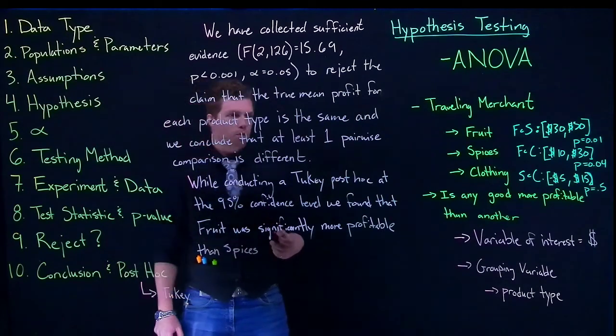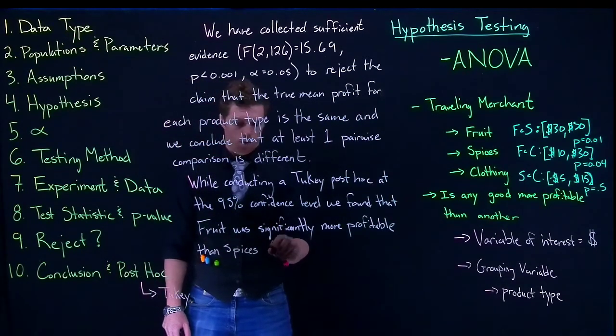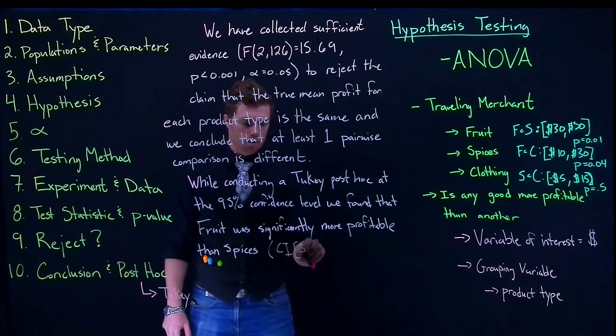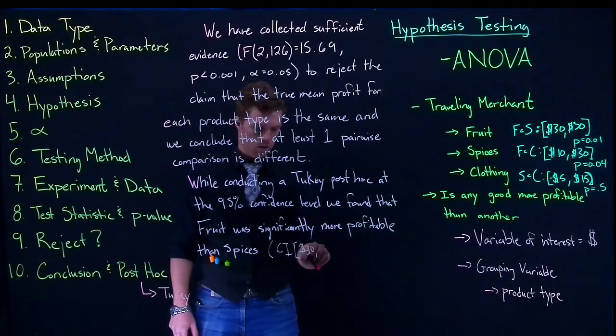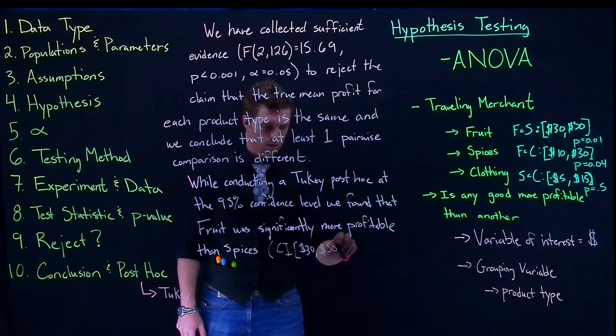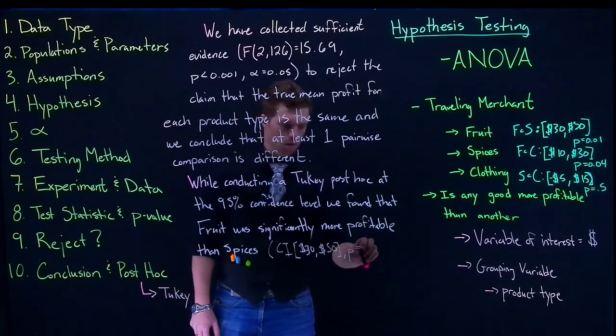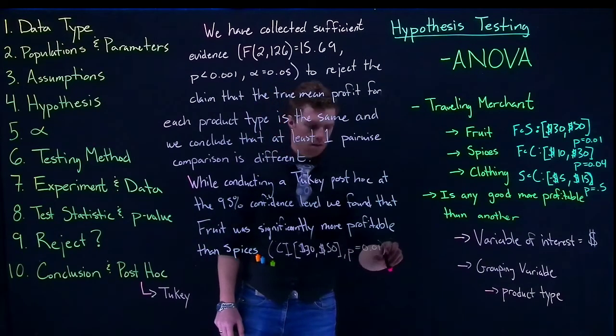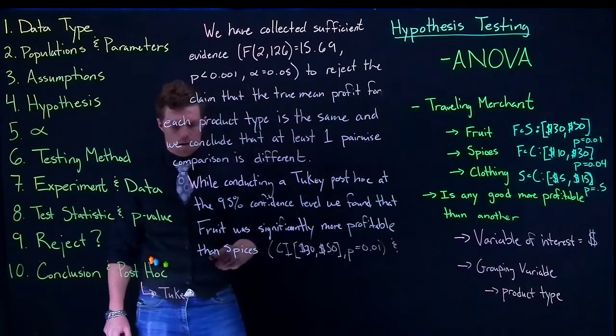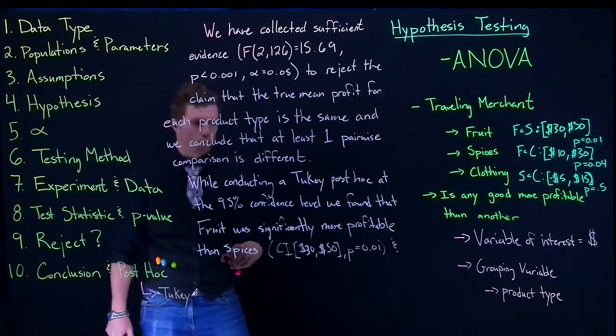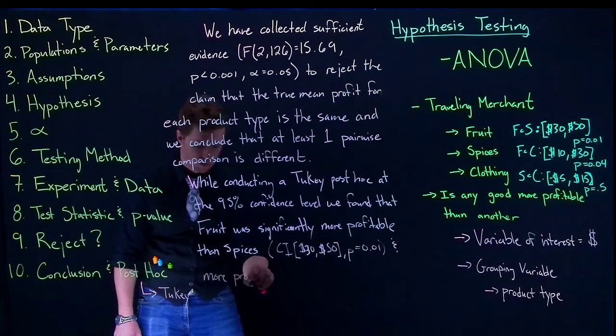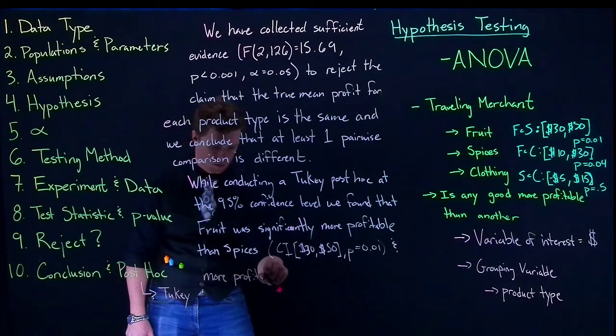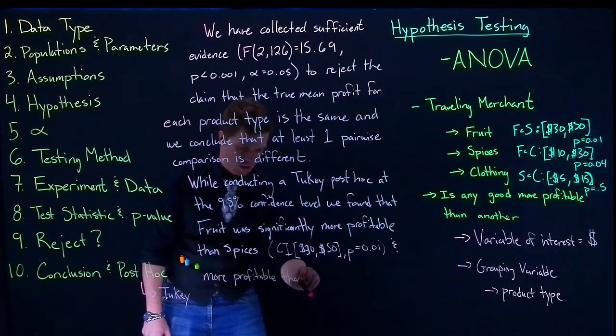Now we need to include our confidence interval. So we will do confidence interval 30, 50, p equals 0.01, and more profitable than clothing. And we can include, let's do a parenthesis. Our confidence interval was equal to 10, 30 with a p-value 0.04 and a period.